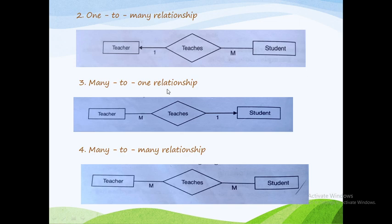The third is many-to-one relationship — many teachers can teach one student. For example, in a semester you have six subjects, so six teachers teach one student. The fourth is many-to-many relationship — many teachers can teach many students. In a semester, six teachers can teach a class of 50 students, so that is called a many-to-many relationship.